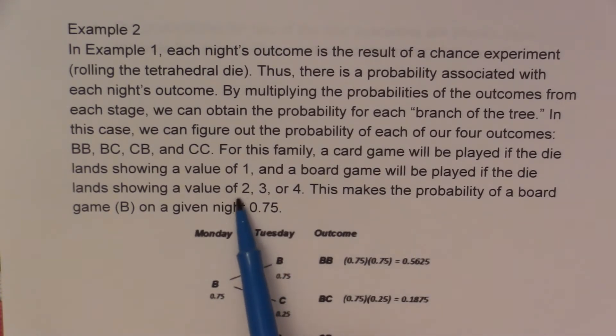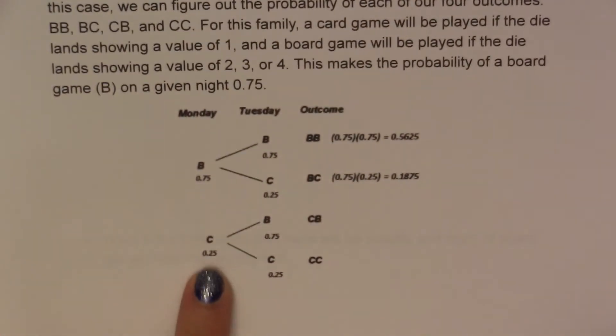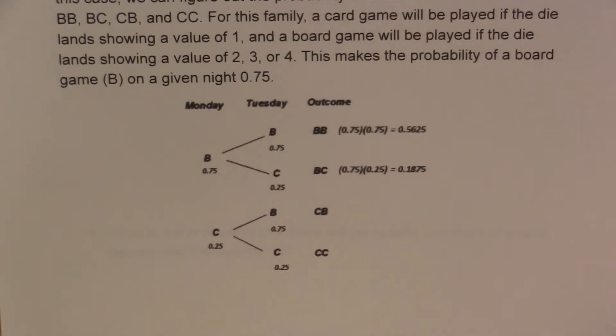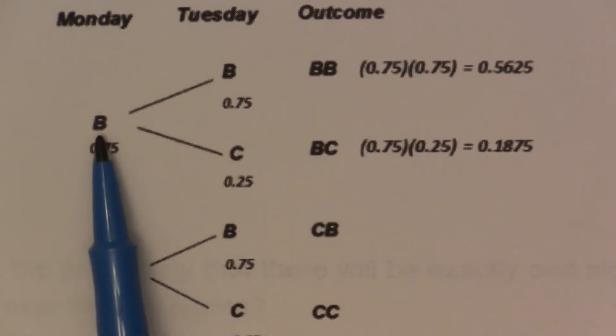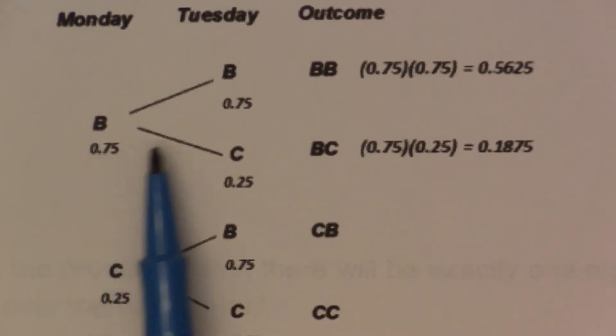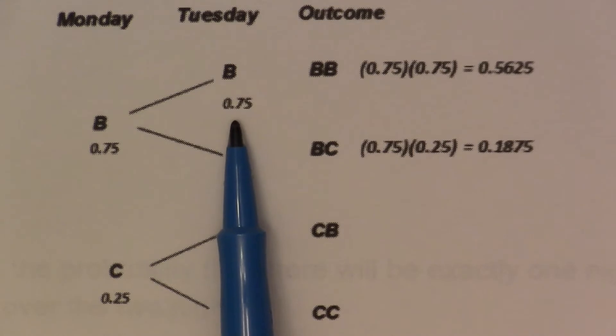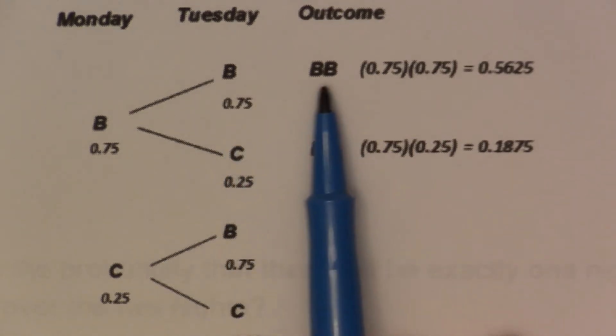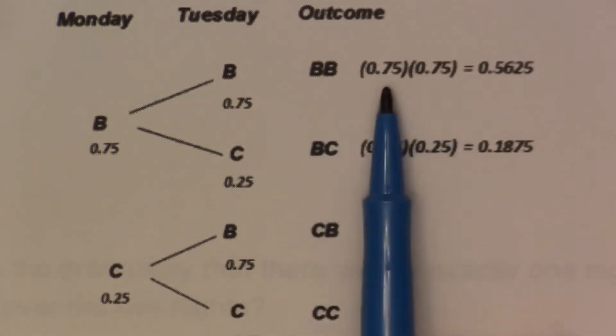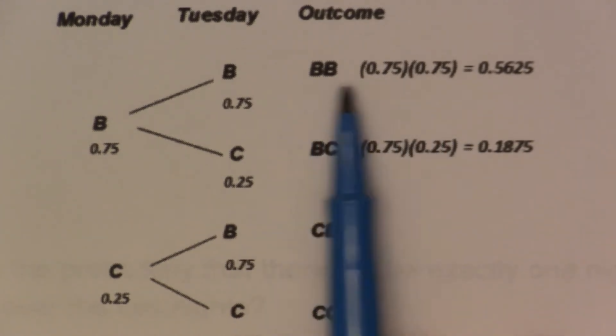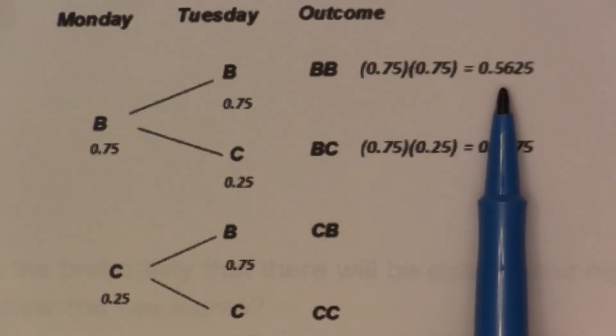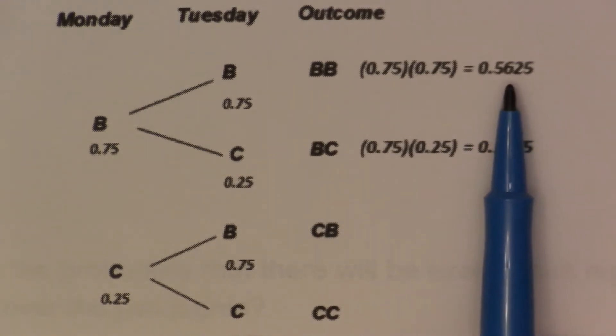So we would have three out of four total options for playing a board game. So in the table, let me try to zoom in a little bit so you can see a little clearer. So they've listed out the probabilities. So a board game was 0.75, and then a board game was 0.75, which then gave our outcome BB. We multiply our two probabilities together. So the probability of playing board games two consecutive nights would be 0.5625, or about 56%.